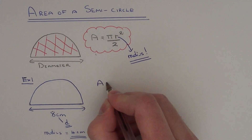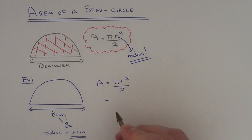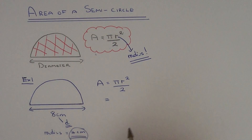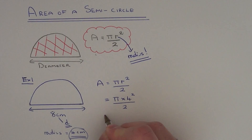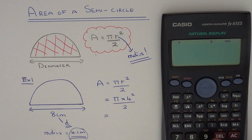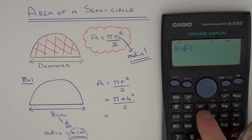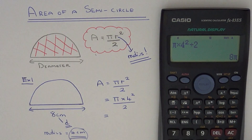Let's write the formula down again: pi r squared divided by 2. Substituting the radius of 4 centimetres gives us pi times 4 squared divided by 2. Type this into your calculator — shift pi times 4 squared divided by 2 — and we get the exact answer of 8 pi.